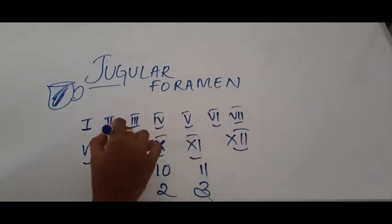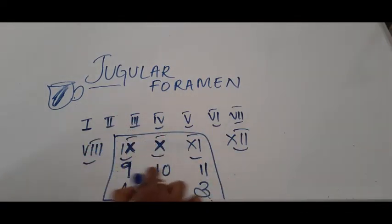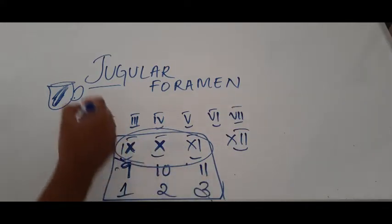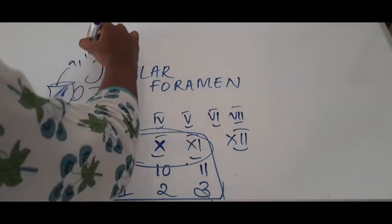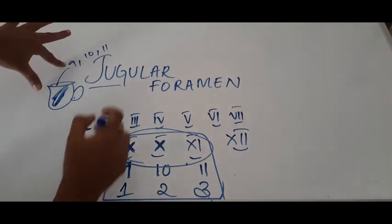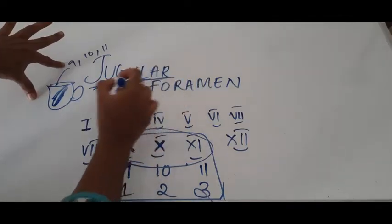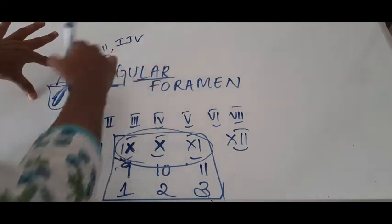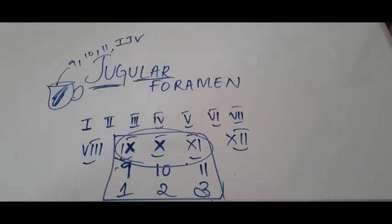Even in our class, we get first, second and third. So we're only taking these three into consideration. So jugular foramen has nine, ten and eleventh cranial nerves. Along with that, since it has the name jugular, you need something related to that. So internal jugular vein also passes through the jugular foramen.